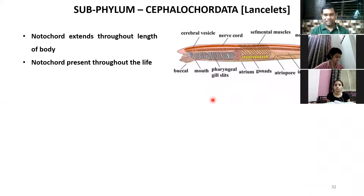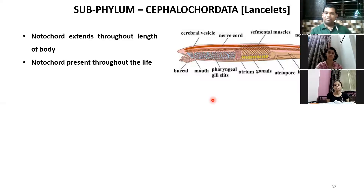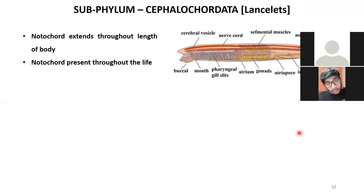Cephalochordata comes between Urochordata and Cyclostomata in classification, so they are most appropriately placed here. Maybe some new species might be discovered later, and then a proper position in the classification will be given to them.